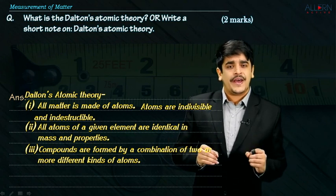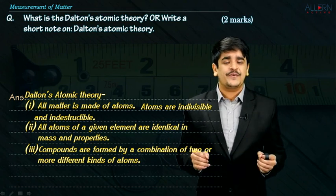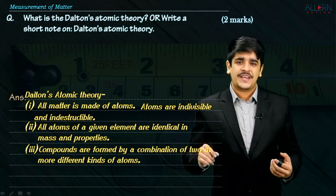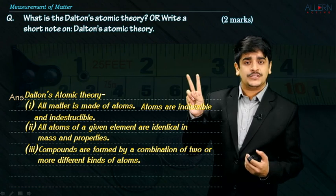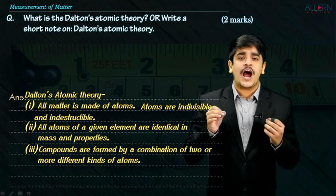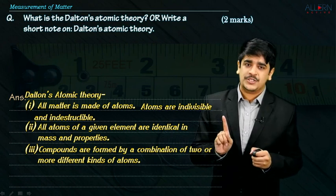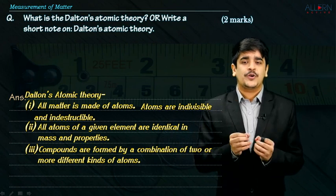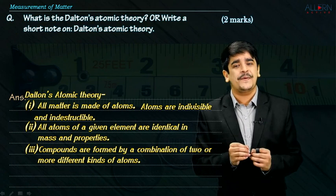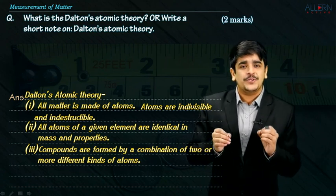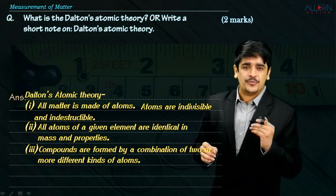Say, suppose I have a compound which is called water. It is given by the formula H2O. It is made up of a total of two elements, hydrogen and oxygen. So for water, I will be requiring two atoms of hydrogen and one atom of oxygen. All of these atoms are going to combine together in a simple whole number ratio and they are going to give me a molecule of water, which means they are going to form the compound water.